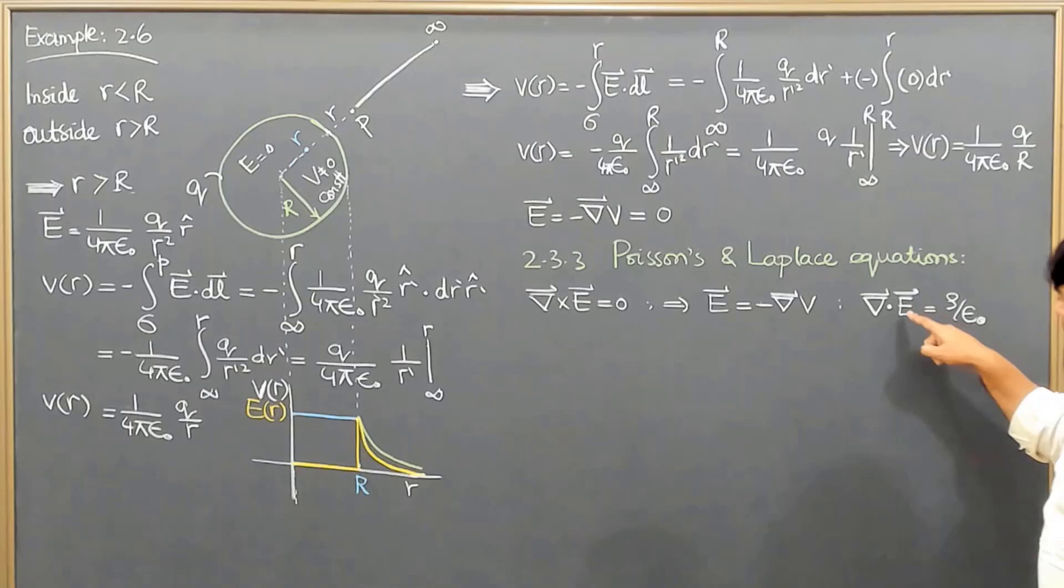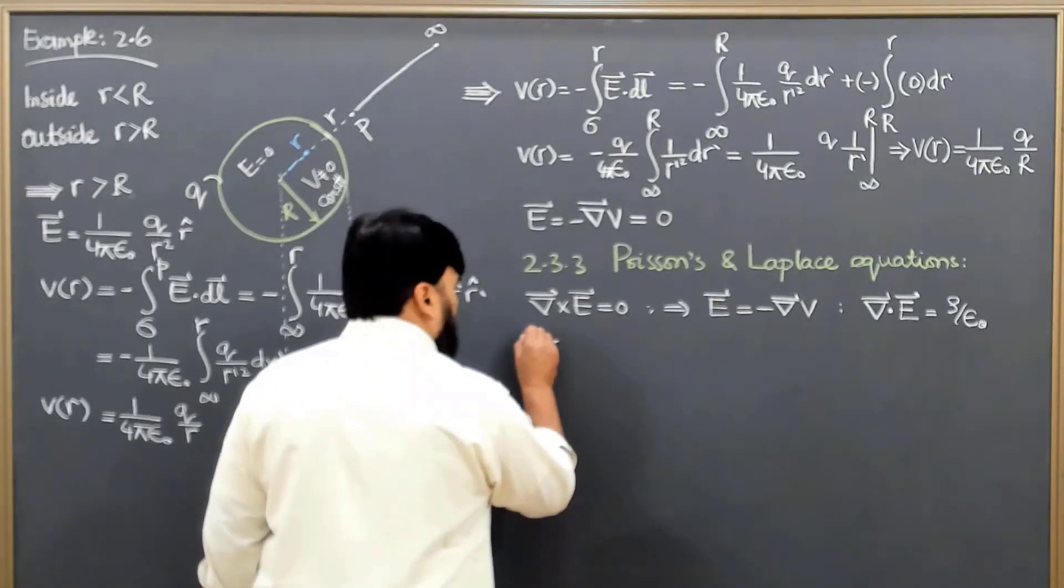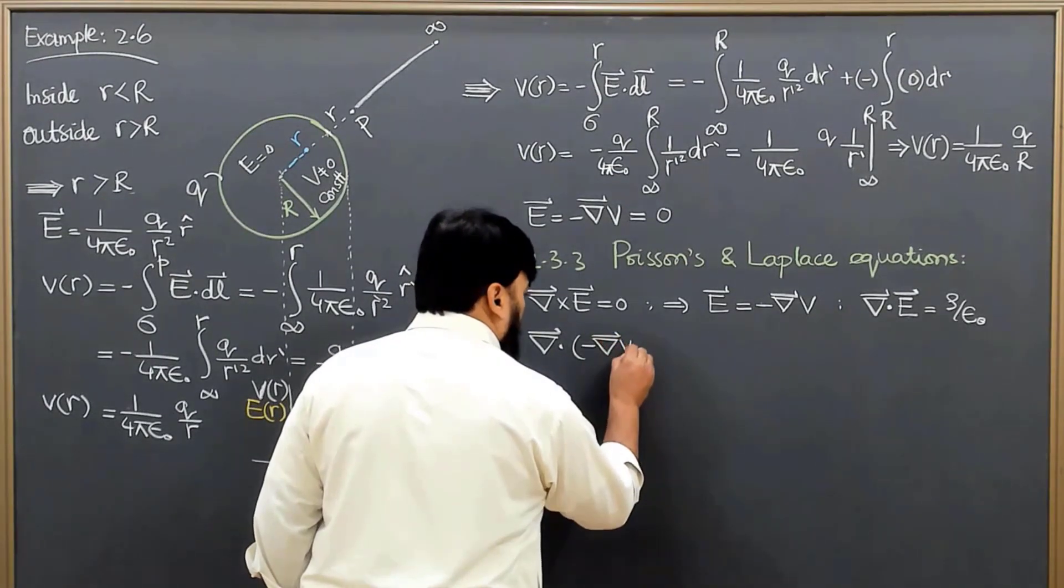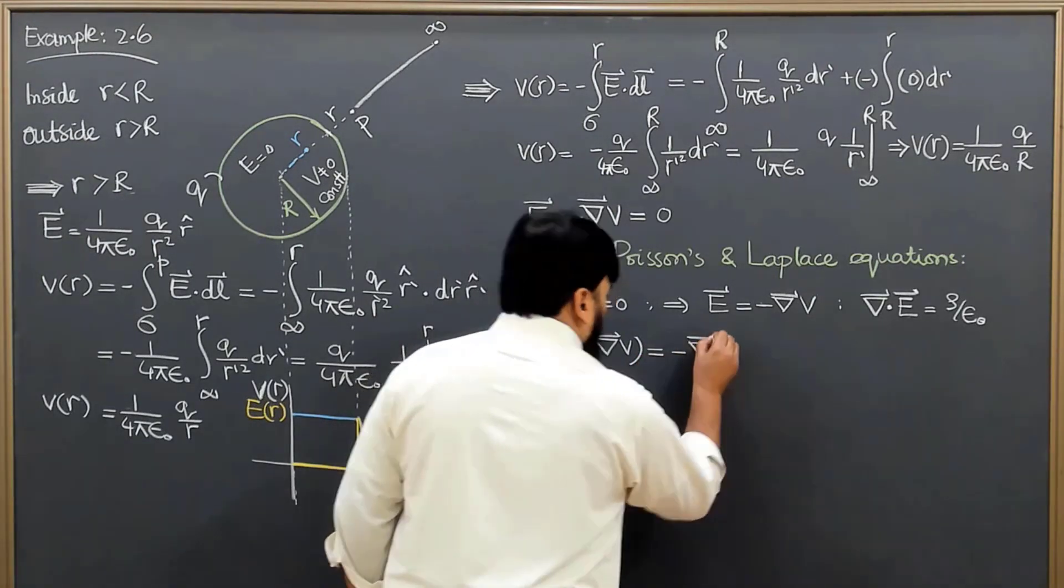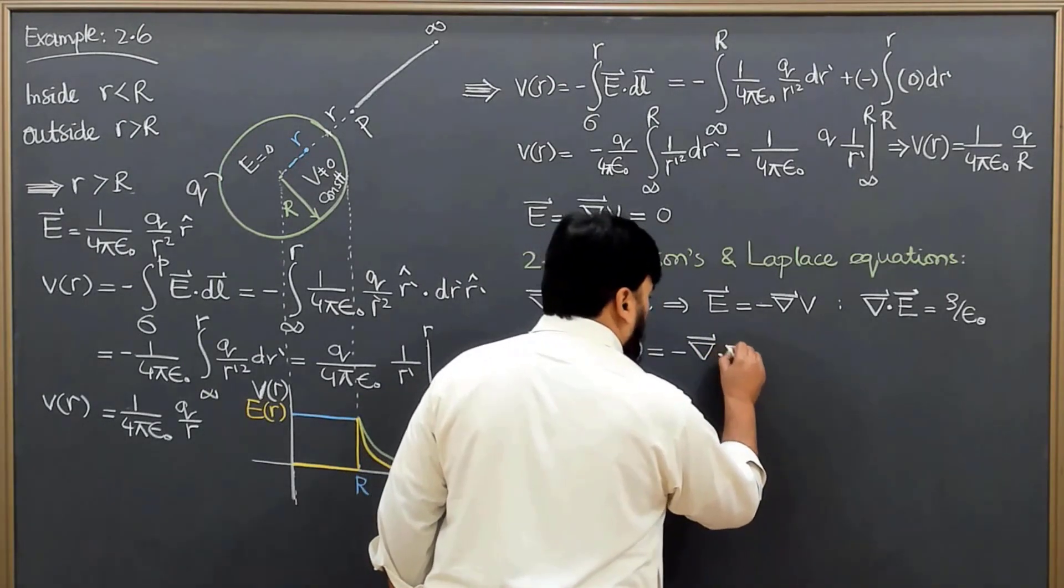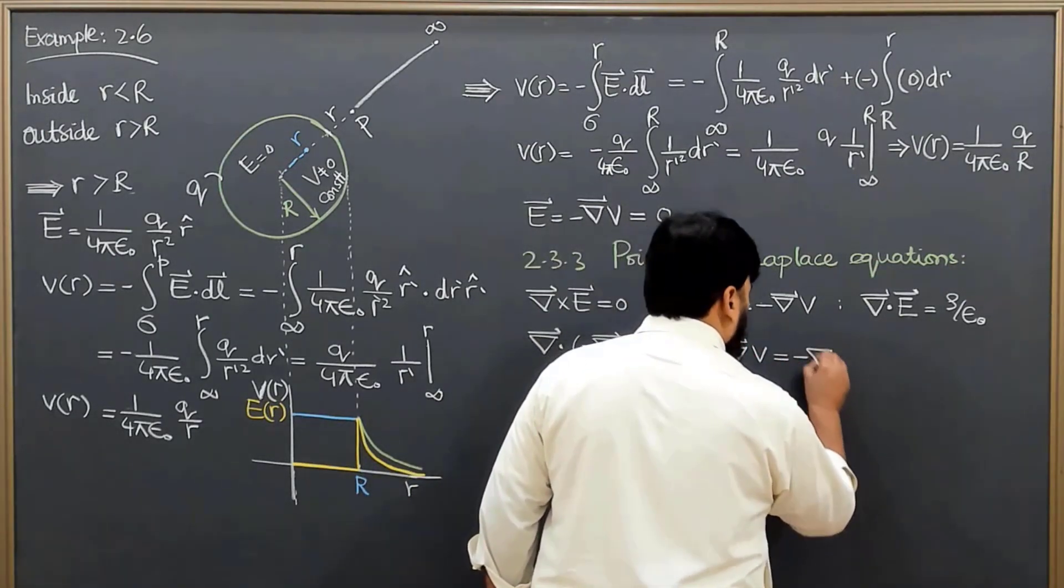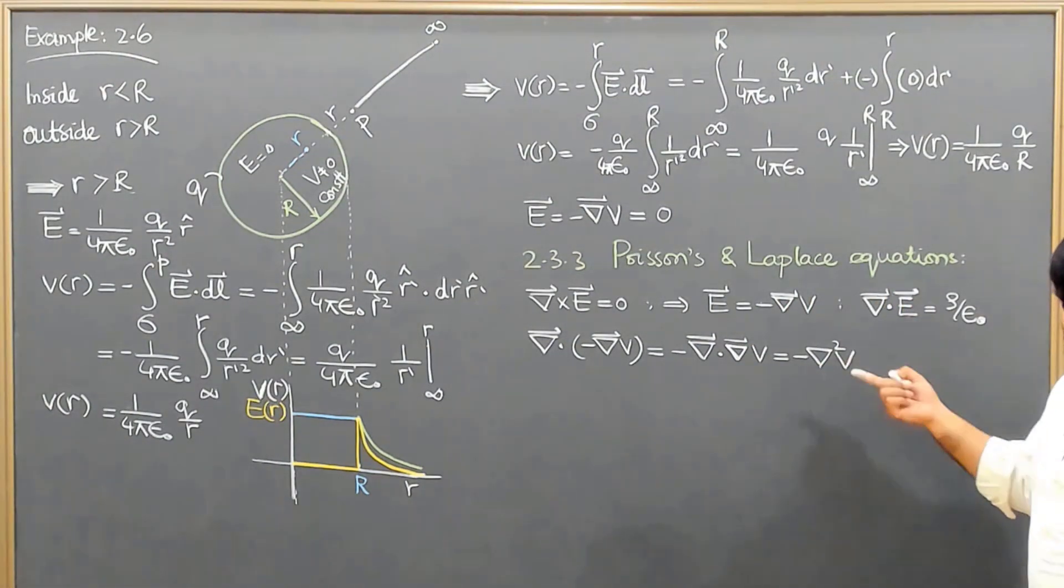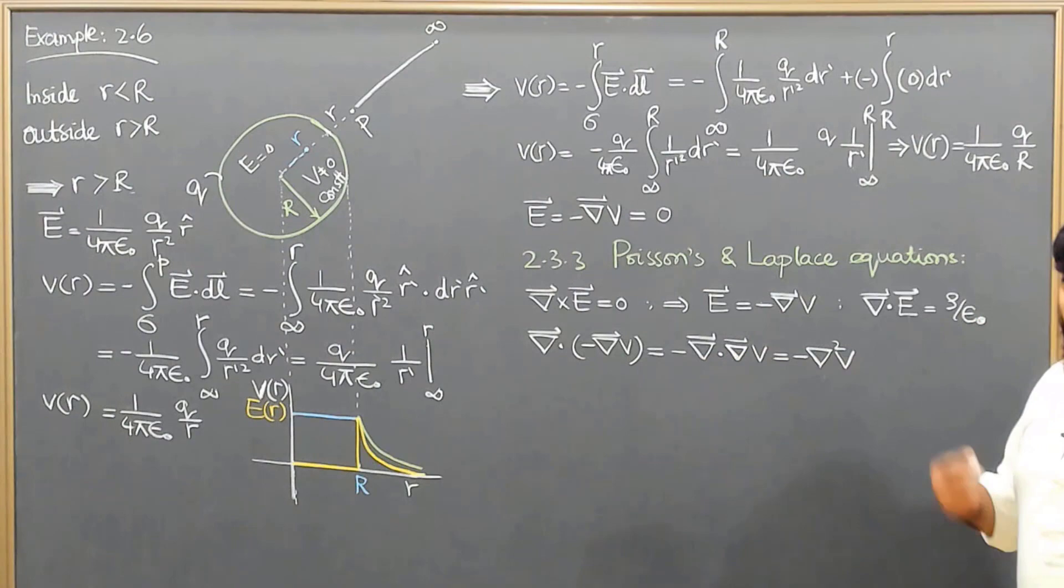Putting the value of electric field from here in this equation, we get that the divergence of negative gradient of electric potential. This is equal to minus the divergence of a gradient, so ∇·∇V, and this is equal to minus ∇²V, where ∇² is the Laplacian. It is a ∇² operator, and ∇² is a Laplacian, the gradient dot product with a gradient, or the divergence of a gradient.